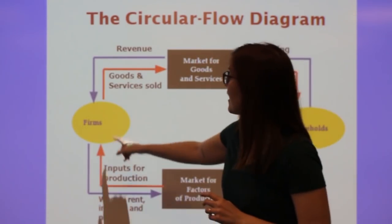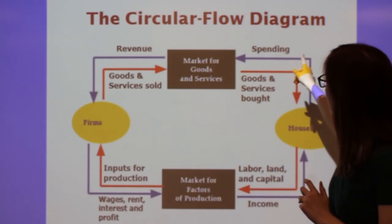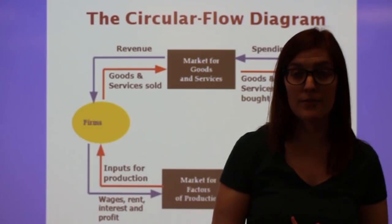So in the product market, the firm is the seller. They sell the goods and services to the households, and in return, we pay for those goods and services, which is revenue for the firm.